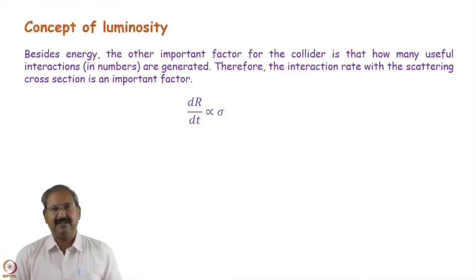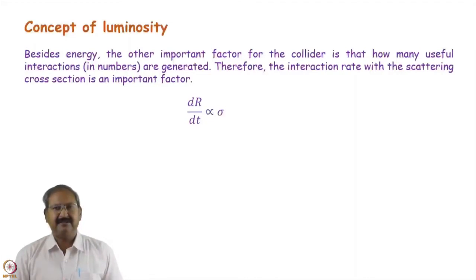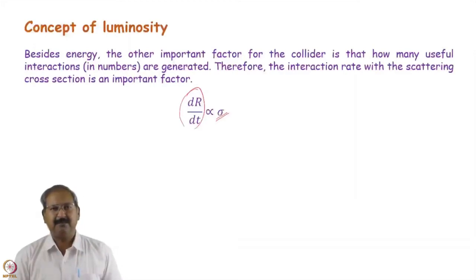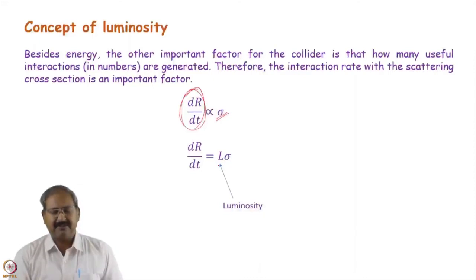Energy alone is not sufficient for colliders. When we hit a fixed target, there are plenty of molecules, atoms, or particles available because the fixed target is high-density material, but the beam is not so dense. So the number of collision events reduces. There is another important factor: the rate of events taking place per circuit depends on the scattering cross section σ for that particular event.